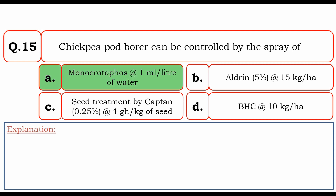Chickpea pod borer can be controlled by the spray of Monocrotophos at the rate of 1 ml per litre of water.